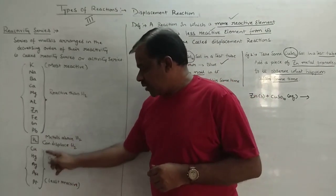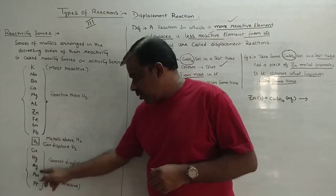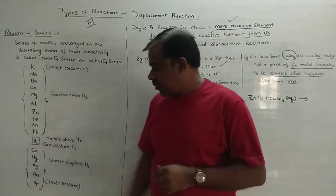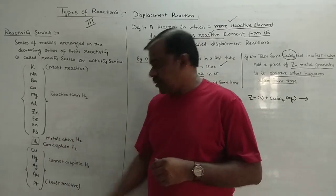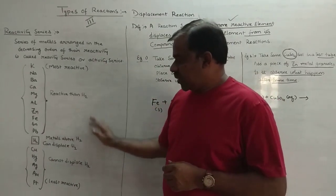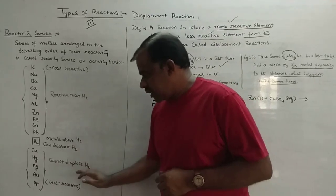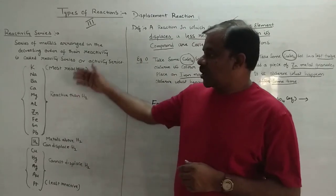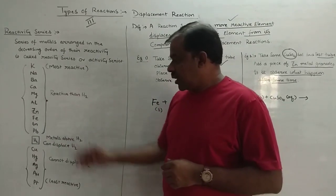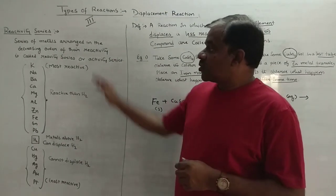Below hydrogen, in Part 3, we also have metals like copper, mercury, silver, gold, and platinum. These are placed below hydrogen because they are less reactive than hydrogen. Overall, in the reactivity series, we have more reactive metals, then hydrogen, and then less reactive metals. Metals more reactive than hydrogen can displace hydrogen from its solution, and those below hydrogen cannot.